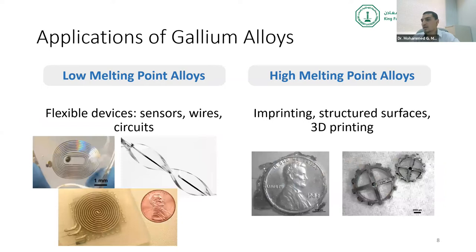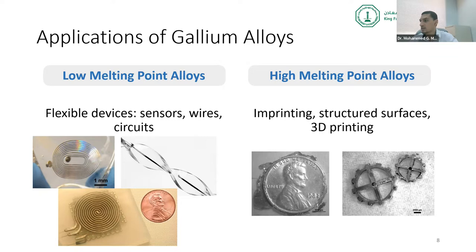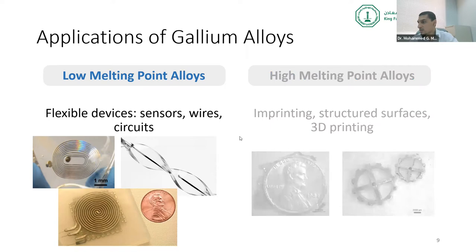What I'm going to talk about regarding gallium alloys covers two types. First are the low melting point alloys — like the gallium-indium alloy — and their applications in flexible devices like sensors, wires, and circuits. The second part covers high melting point gallium alloys and their applications in imprinting, structured surfaces, and 3D printing. I'll start with the low melting point alloys.